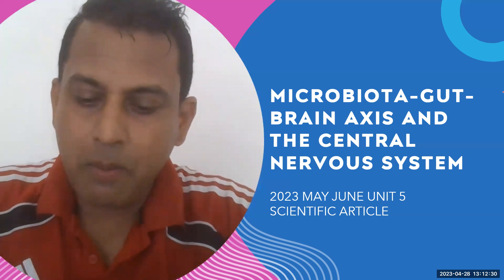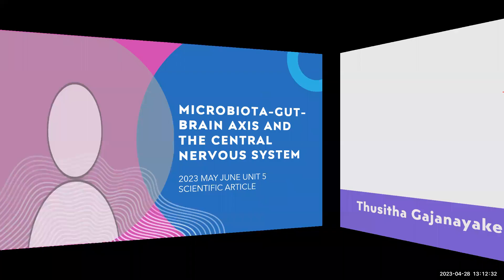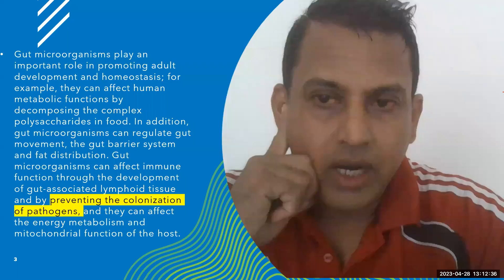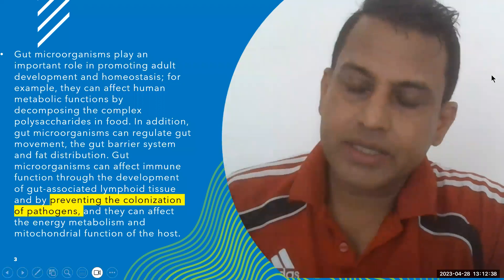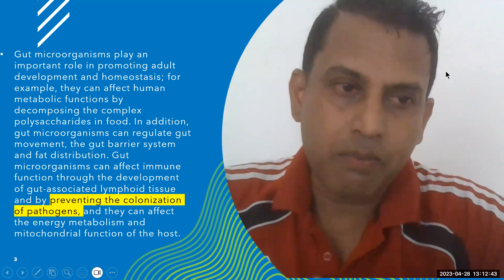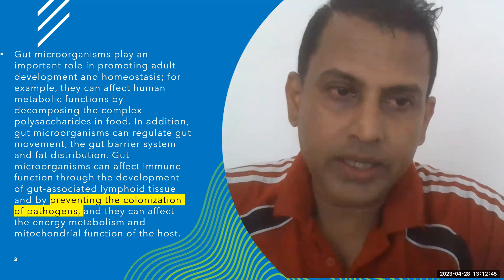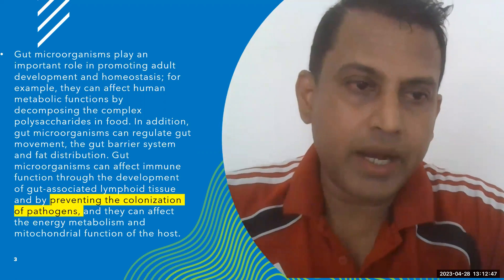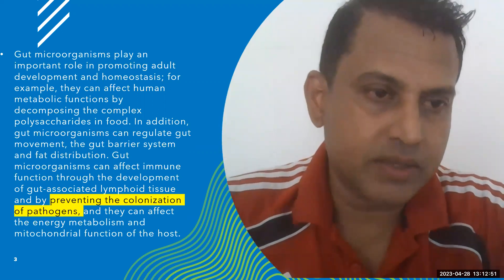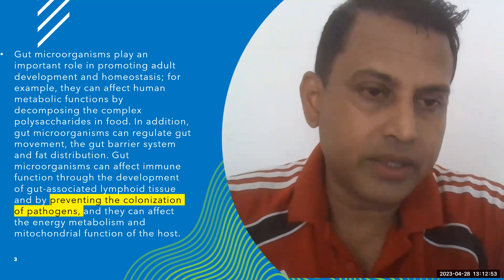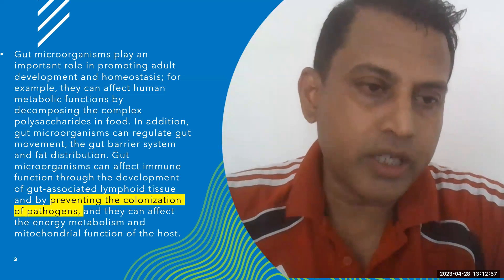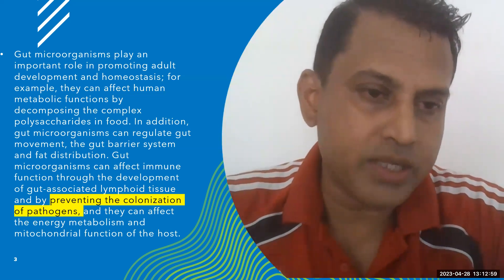Let's take paragraph two. In paragraph two, this is the text written. Gut microorganisms play an important role in promoting adult development and homeostasis. For example, they can affect human metabolic function by decomposing the complex polysaccharides in food.